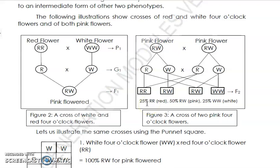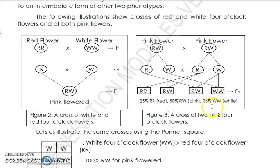One out of four is 25%. How many are RW (pink)? Two out of four — that is 2/4 × 100% = 50%. Half of four is two, so 50% are pink because the genotype is RW. How many are WW? One out of four — that is 1/4 × 100% = 25%. F2 stands for second filial generation.